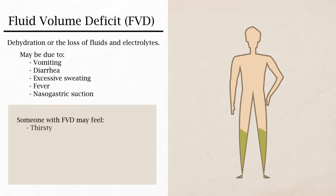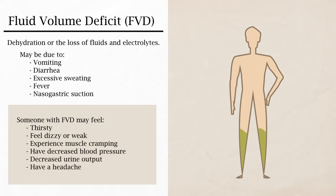Someone with FVD may feel thirsty, feel dizzy or weak, experience muscle cramping, have decreased blood pressure, decreased urine output, or have a headache.